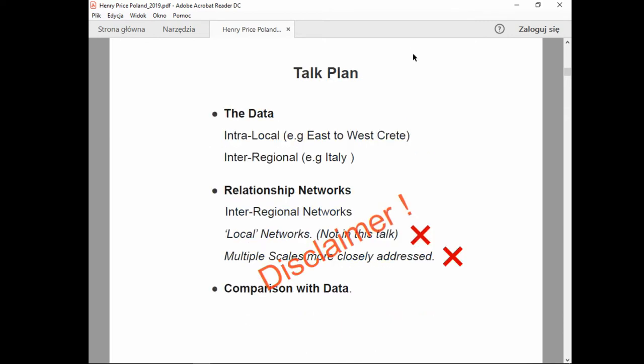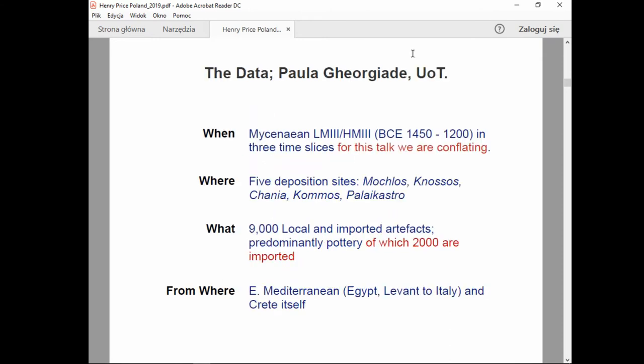So the talk plan here is kind of doing the inter-regional and local data. We're kind of looking at the pots, where they come from. That's maybe the import origin. And then the relationship networks, which is formed as a result of saying, oh, these two pairs are interacting with each other via imports. We won't have time to look at the local network, which is kind of on Crete itself. And the multiple scales at which the interactions occur won't be fully addressed here, because we've only got 15 minutes.